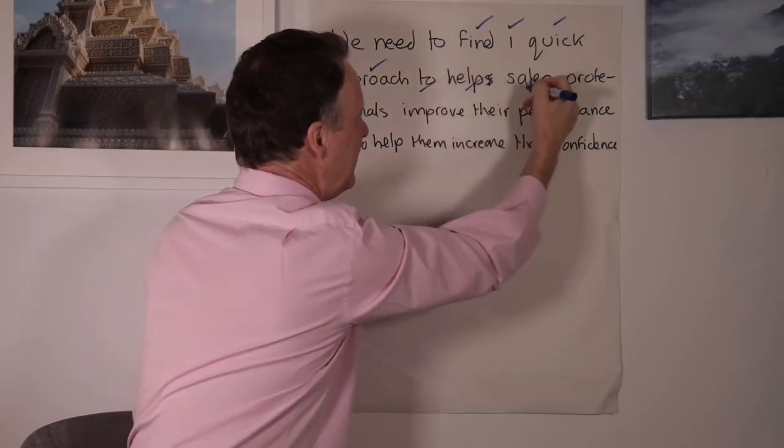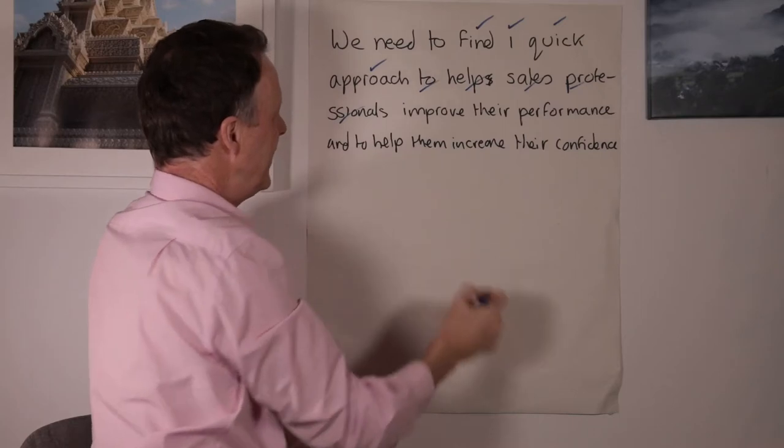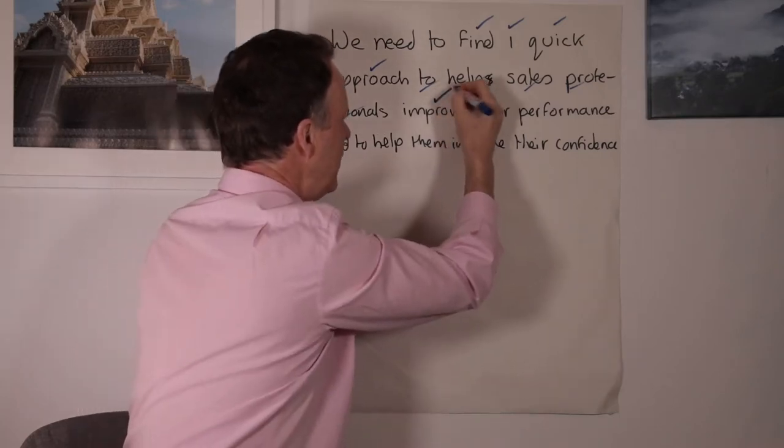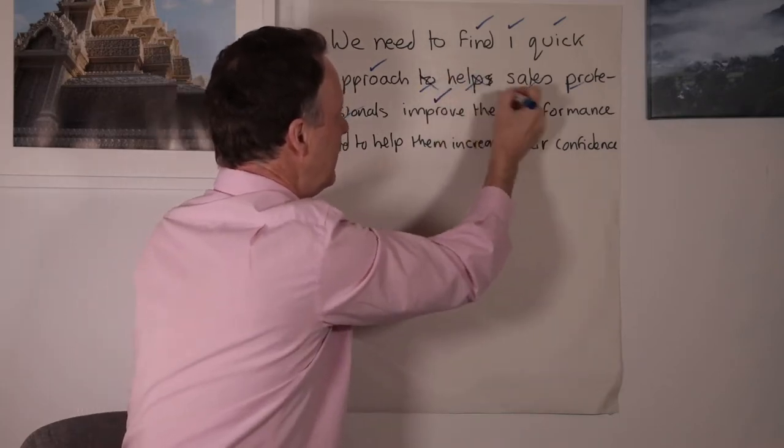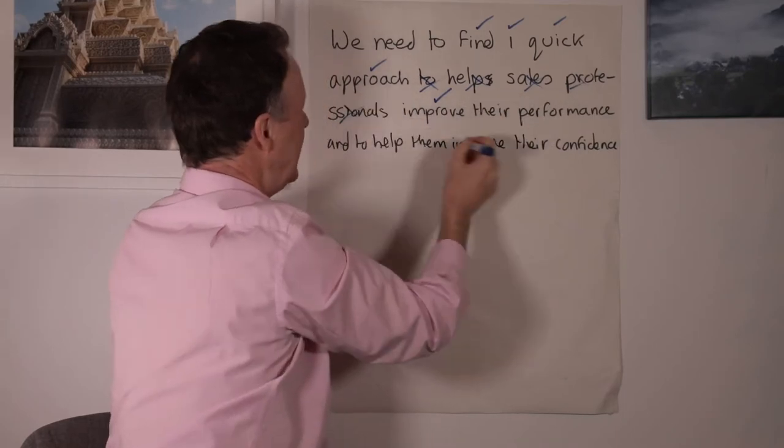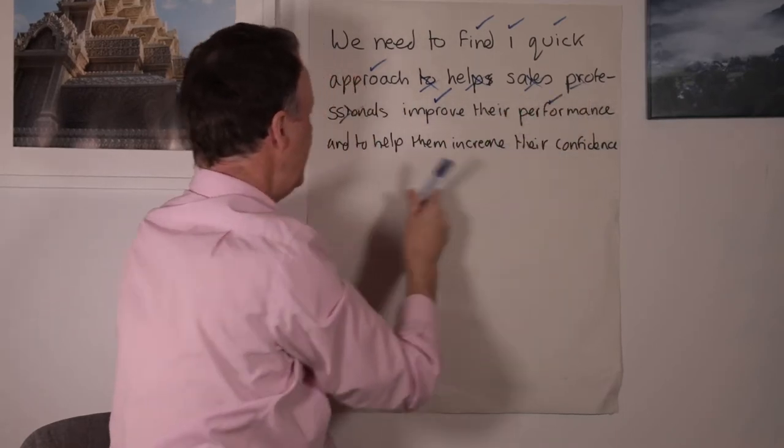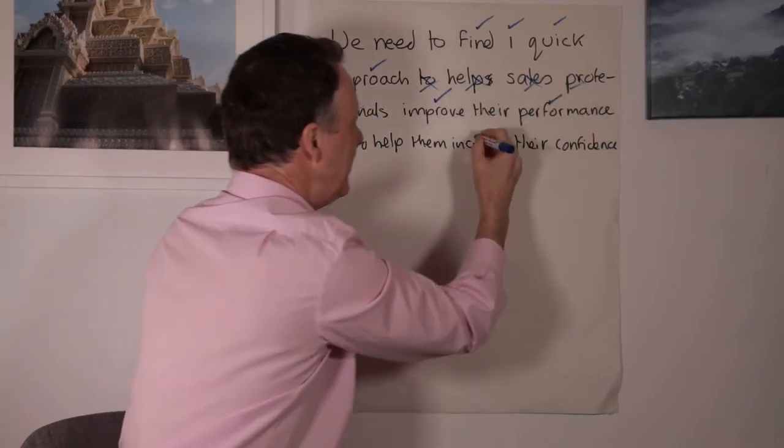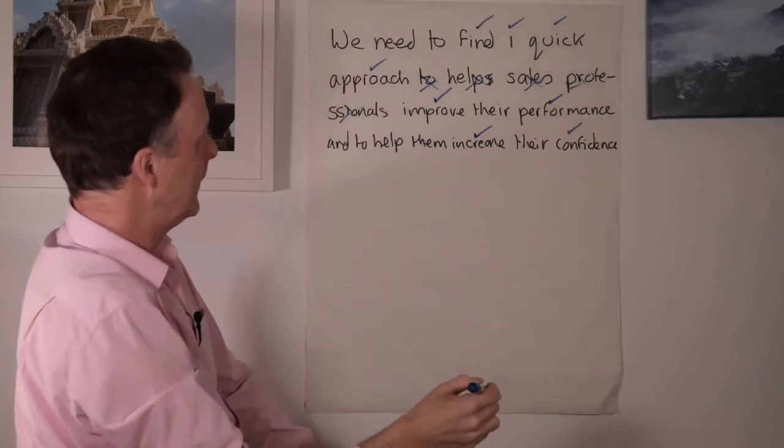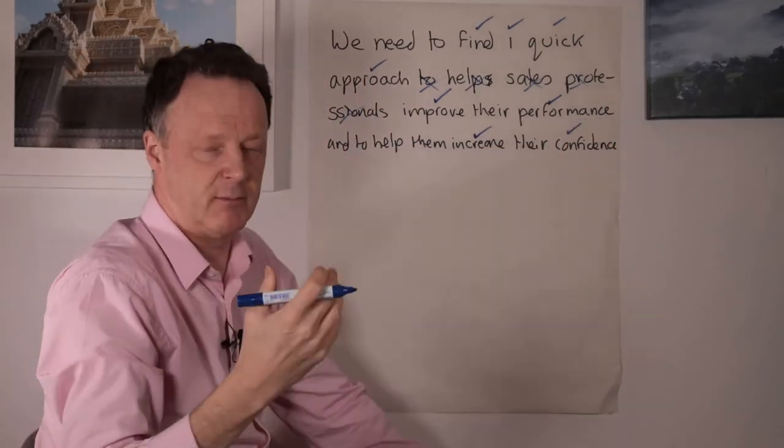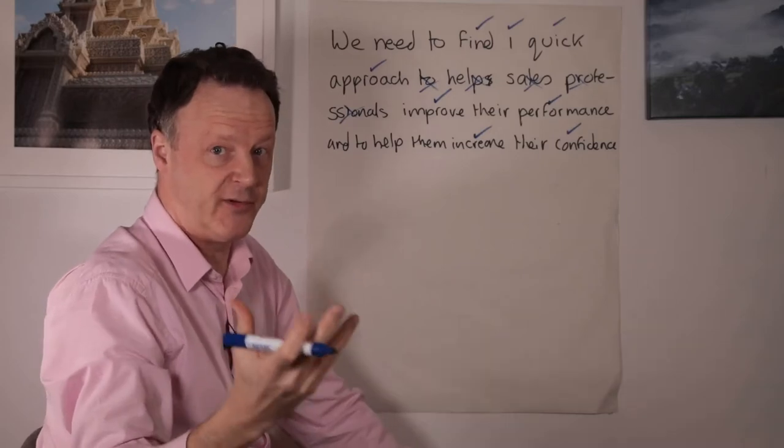If I was using traditional previous generation note-taking, I'd record either verbatim or part verbatim. But making that switch, the first thing is deep filtering. So I'd probably keep find one quick, I'd keep approach. I wouldn't keep any of this because I know I'm talking about sales professionals. I would keep improve performance and increase confidence. So I'd only keep about maybe 45% of what was said.